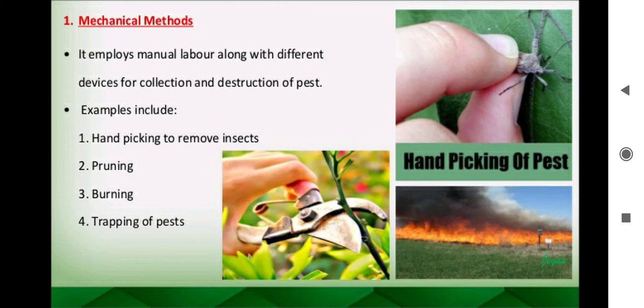The first is the mechanical method, which employs manual labor along with different devices for collection and destruction of pests. Examples include hand picking to remove insects — as seen in the image, picking the insect from the leaf and killing or removing it from the crop. Burning is another technique: whatever infected part is on the plant must be cut to stop spreading. After crop collection, the stubble and other parts should be burned to destroy larvae, pupae, or other weed plants that could grow when the new crop starts.